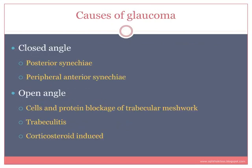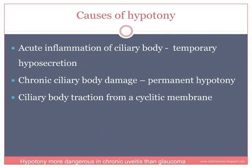For glaucoma, a rise in intraocular pressure can occur through a closed angle mechanism or an open angle mechanism. Posterior synechiae occurring 360 degrees can result in annular synechiae, pupil block, iris bombé, and angle closure glaucoma. Peripheral anterior synechiae also cause angle closure glaucoma. Open angle glaucoma occurs when cells and protein from uveitic exudation block the trabecular meshwork, or when trabeculitis occurs as part of iridocyclitis. Corticosteroids, the mainstay of uveitis treatment, can also cause glaucoma.